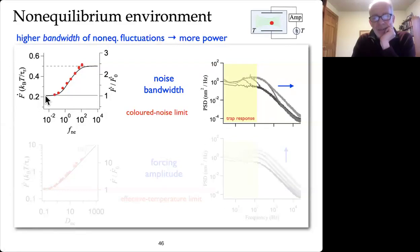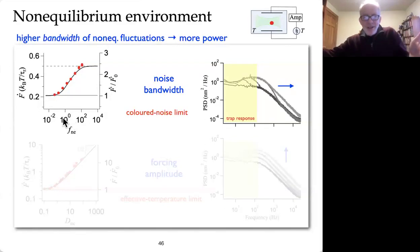And so here we're varying the bandwidth of the environment. And what we can see is that as the bandwidth of the noise that's being created is higher and higher, that we're getting more and more power out of it. It actually, we didn't quite make it to the crossover, but it should saturate at a certain point. And this is where the bandwidth of the noise starts to exceed the bandwidth of the trap.